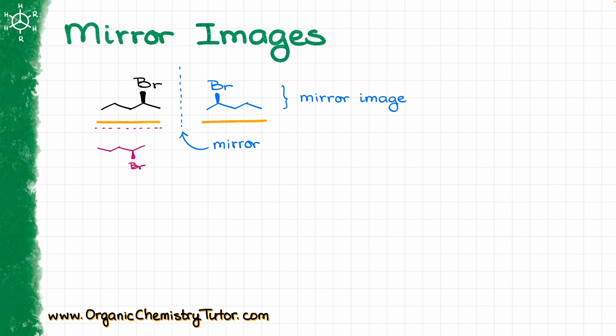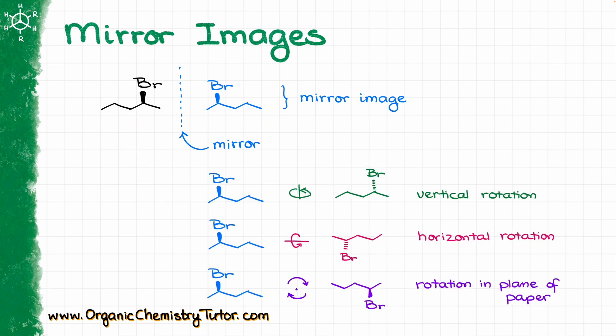Once you have your mirror image, there are three rotations in space that you can do to see if those molecules are superimposable with the original or not. Those rotations are going to be the vertical rotation, which is the rotation in the vertical plane, we can have the horizontal rotation, or we are essentially just flipping the molecule over the horizontal plane.